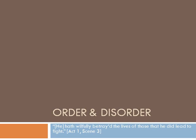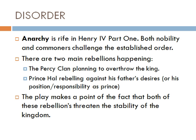Let's have a look at the theme of order and disorder in the play King Henry IV Part 1. While anarchy is rife in Henry IV, both nobility and commoners alike challenge the established order. There are two main rebellions: the first is with the Percy clan, rebelling against the king with a plan to overthrow him and put Mortimer on the throne. The second is with Prince Hal, rebelling against his father the king's desires and not taking responsibility for his position as prince and heir to the throne. The play makes a point that both of these rebellions threaten the stability of the kingdom.